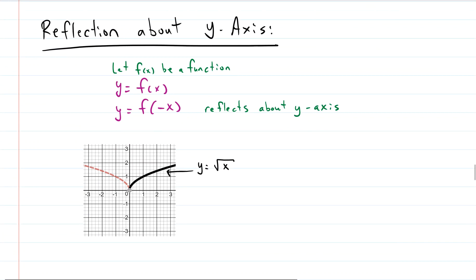Reflection about the y-axis. Here we're taking the function and rotating it around the y-axis — it's almost as if we have a stick being the y-axis and we're spinning that stick, coming around towards us and then to the left. Our original function is y equals the square root of x. To achieve this reflection about the y-axis, we have to multiply by negative inside the function. So our new equation is y equals the square root of negative x.